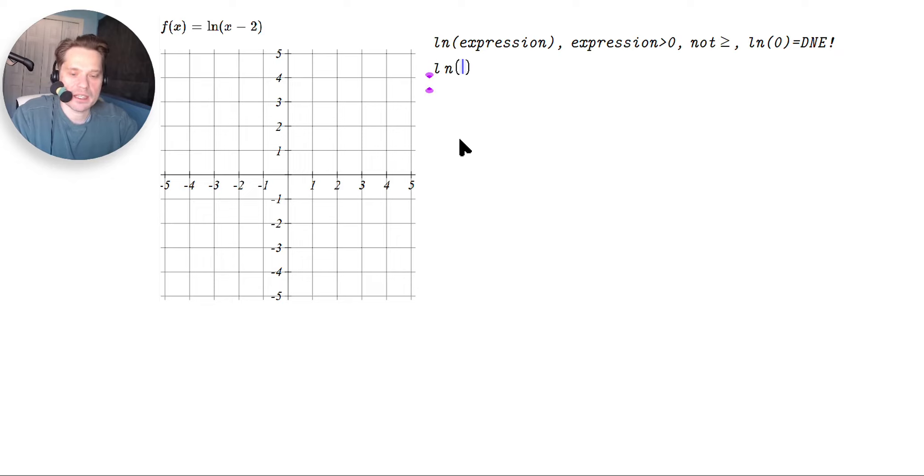So we're going to have ln of x minus 2. That means in our particular case, x minus 2 must be strictly greater than 0. So you're going to do x minus 2 plus 2, it has to be 0 plus 2. So add 2. So they cancel on the left side. That is, x is greater than 2. This is the inequality form.